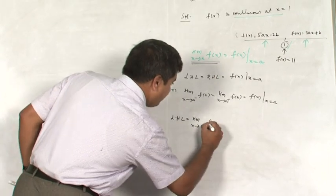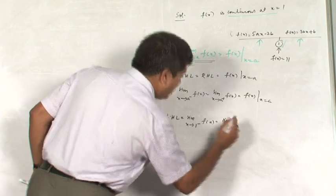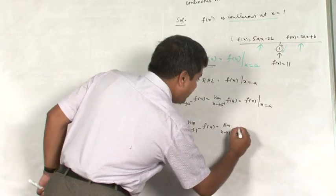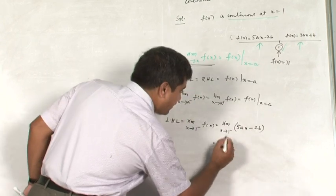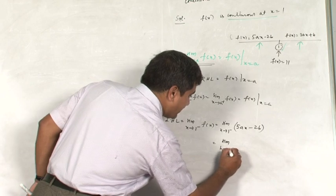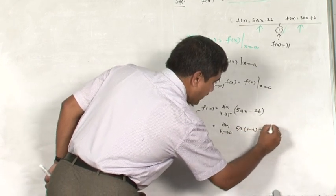I am talking about f of x, that is limit x tends to 1 minus f of x, and the left side is 5Ax minus 2B. Well I will write this as we have already learnt: limit h tends to 0, 5A into 1 minus h minus 2B.